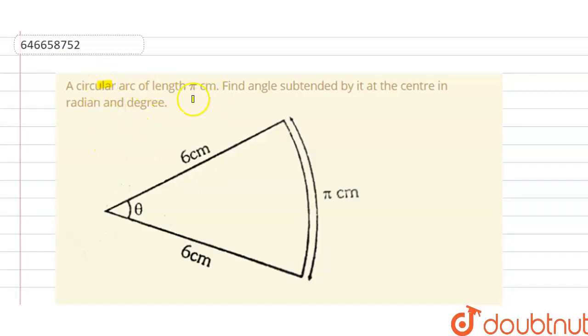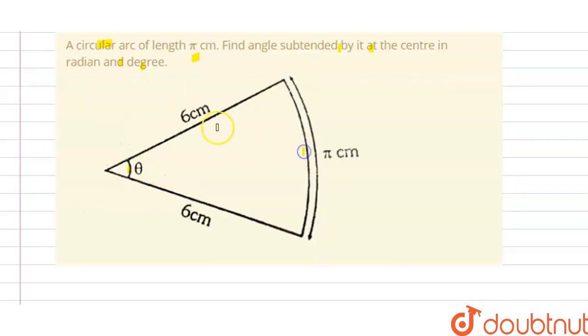A circular arc of length π centimeters. Find the angle subtended by it at the center in radian and degree. So we have this is θ, and this is π, and this is 6 centimeters, and this is 6 centimeters.